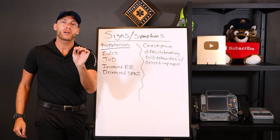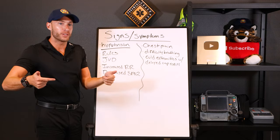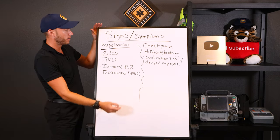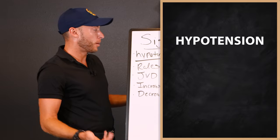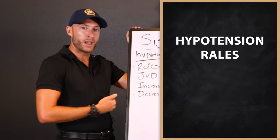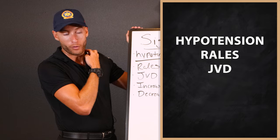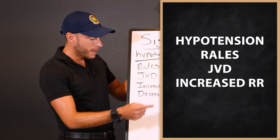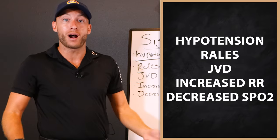These are the clear-cut signs and symptoms for cardiogenic shock. Hypotension — we're in hypoperfusion, the blood is not pumping effectively, so we have low blood pressure. Rales — we're going to hear that sound because the heart is failing and blood backs up to the lungs. JVD — that goes with heart failure. Increased respiratory rate because the patient is having a hard time breathing. And hypoxia, meaning SpO2 is low and oxygen levels are low.